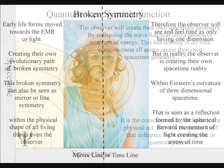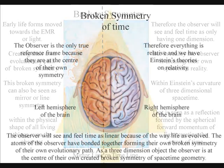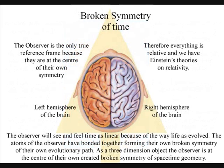The observer will see and feel time as only having one dimension, because there was an evolutionary advantage in seeing time this way. But in reality, the observer is creating their own space-time geometry within the fabric of Einstein's curvature of three-dimensional space-time.